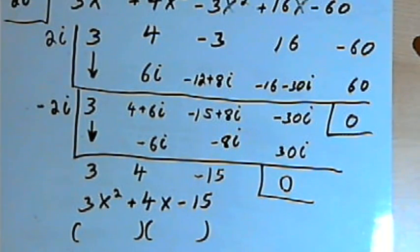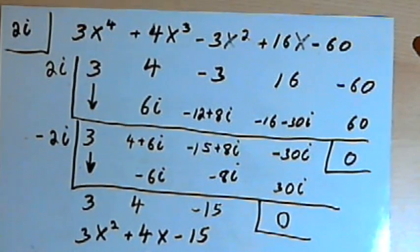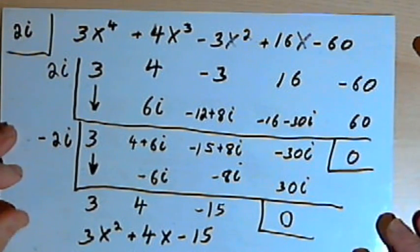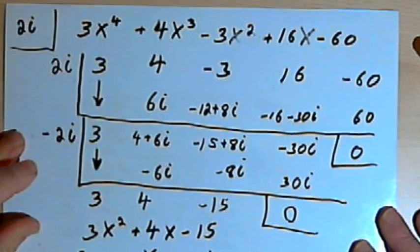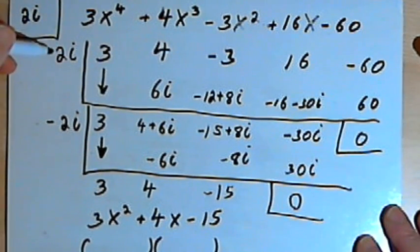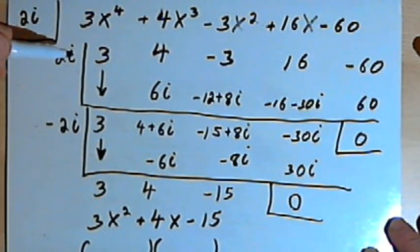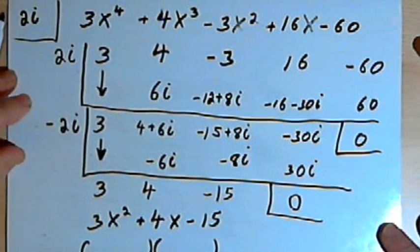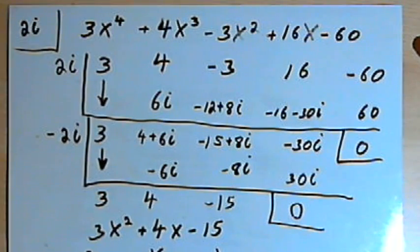Okay? And that's about all there is to it. Synthetic division with imaginary numbers is really following exactly the same rules that you use for regular synthetic division. You just have to remember the rules for imaginary numbers, that i times i is i squared, and i squared equals negative 1. Okay? That's it. Take care and I'll see you next time.